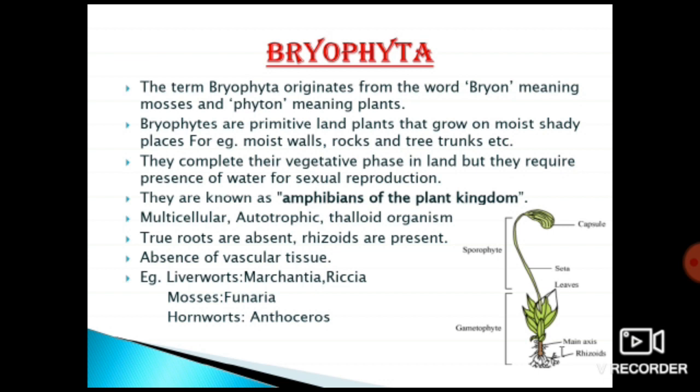Now a question arises: what are mosses? In Hindi, they are called 'kai.' You must have seen them in the rainy season — on walls, bricks, and rocks that don't get sunlight and stay wet, there is a development of a green, soft, carpet-like layer. Those are mosses.